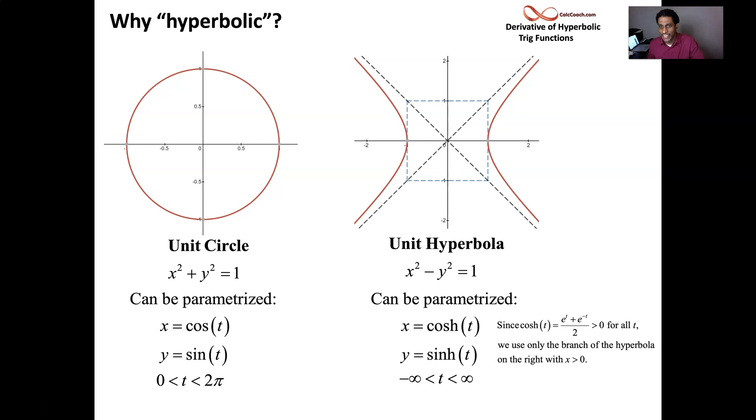Now, so as a technicality, we have the fact that, remember, hyperbolic cosine was the formula E to the T plus E to the minus T all over 2. That will never be zero. Remember the graph. It was the lowest point is when it was 1. And so because of that, then the X value here in this parametrization is always 1 or bigger. And so that's why we only have the right branch. We can only, when we're parametrizing this manner, we're only traversing the right branch of the hyperbola.